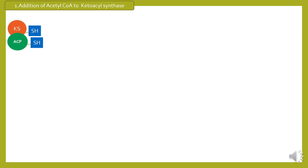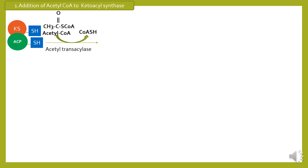First step of reaction is addition of acetyl-CoA to ketoacyl synthase. Jis ke andar ketoacyl synthase enzyme ACP — acyl carrier protein — ke saath bind kar jaye ga, jo ke acetyl-CoA aur acyl group ko carry karti hai. Ab yeh ACP react karegi acetyl-CoA ke saath in the presence of enzyme acetyl transacylase, jis se coenzyme A yahan se release ho jaye ga aur acetyl group ko ACP protein carry kar le.